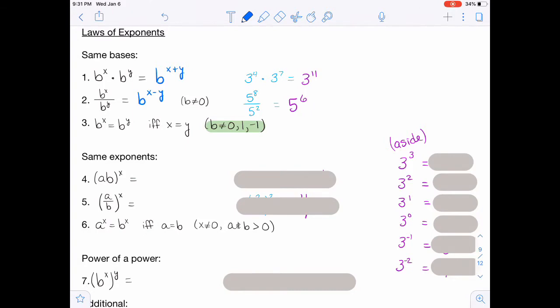For number four, you are essentially distributing that exponent. So you're going to have a to the x times b to the x. And numerically here, we have 3a to the fourth, 3a the quantity to the fourth. So the 3 gets the power of 4, which is 81, and the a also gets that exponent, so 81a to the fourth.